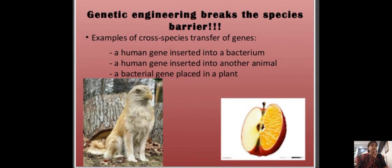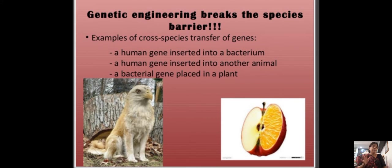Genetic engineering breaks the species barrier. Examples include cross-species transfer of genes: a human gene inserted into a bacterium, a human gene inserted into another animal, and a bacterial gene placed in a plant.